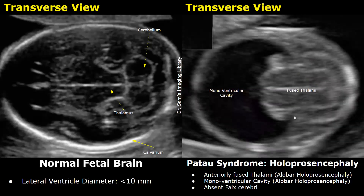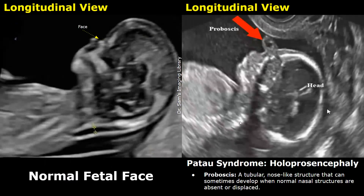The fused thalami are seen on the anterior side of the brain, and the monoventricular cavity is usually seen posteriorly. These features strongly suggest alobar holoprosencephaly. The falx cerebri is also absent.